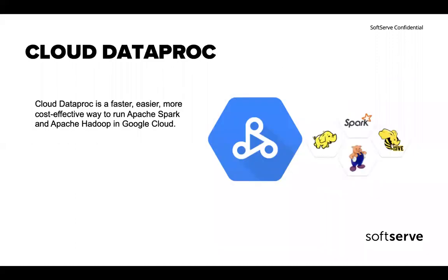The first service is Cloud Dataproc. Cloud Dataproc is a faster, easier, and cost-effective way to run Apache Spark and Apache Hadoop in Google Cloud. This service is a cloud-native solution that covers all operations related to deploying and managing Spark and Hadoop. In simple terms, with Dataproc, you can create a cluster of instances, dynamically change the size of this cluster, configure the cluster, run MapReduce jobs, and so on.